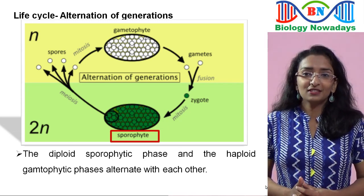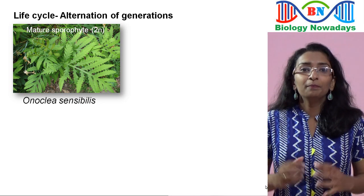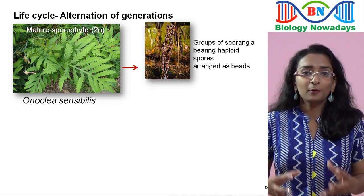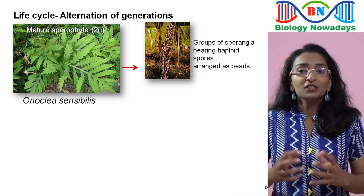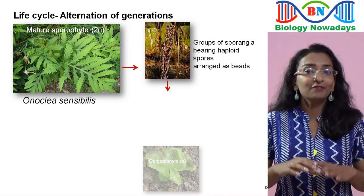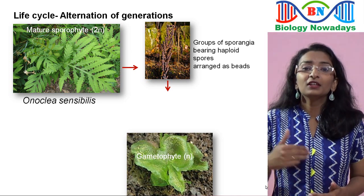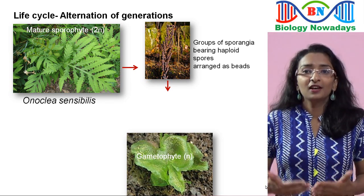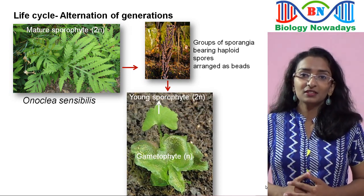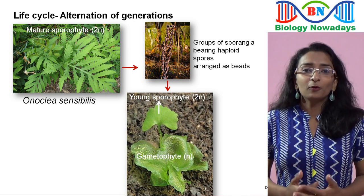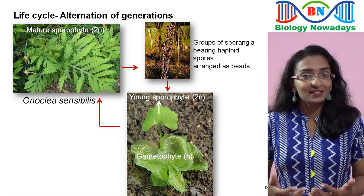Let's see the alternation of generations in the fern. The diploid sporophyte will produce leaf-like structures containing groups of sporangia bearing haploid spores. Each haploid spore will germinate into a haploid gametophyte, which is a flat thallus. From this gametophyte, a zygote is produced by the fusion of gametes, and from the zygote, a young diploid sporophyte is produced, which you can see as a small leaf-like structure in this picture. The young sporophyte will grow into a matured sporophyte, and the alternation of generations continues.